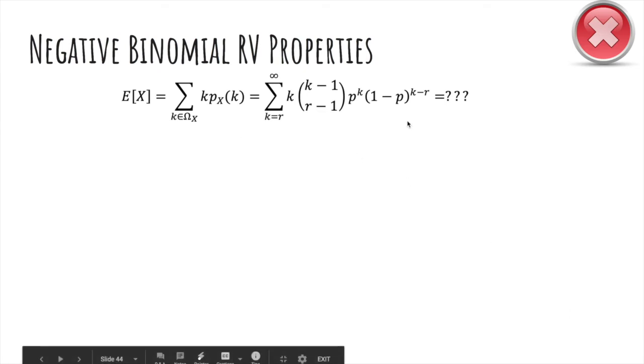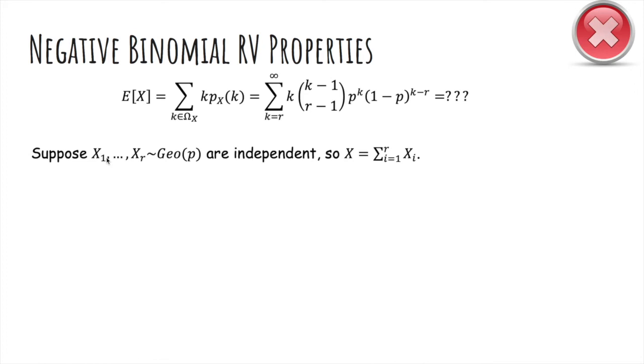So the expected value is hard, similar to binomial, but we can do a trick. So the linearity of expectation trick. So if X1 through Xr are geometric and independent, then X is the sum of these random variables as we showed earlier. The waiting time until the third success is the waiting time until the first, and then from the first to the second, and from the second to the third. So the expected value of X is just going to be r times the expected value of one geometric, which is one over p. And so we get r over p.